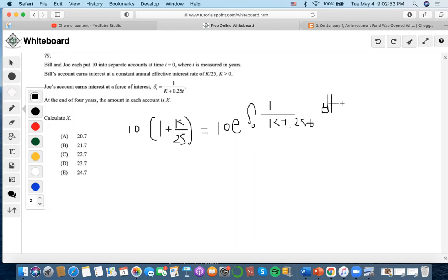At the end of four years, each account equals X. We need to find X. Let's cross out the 10.